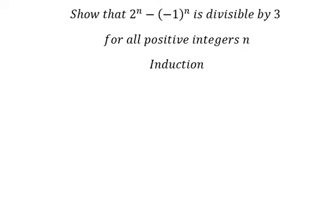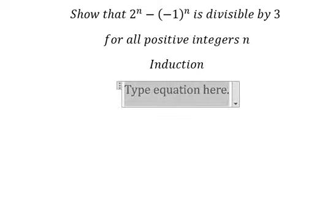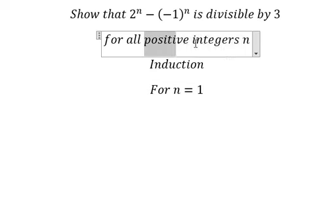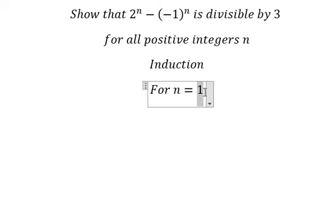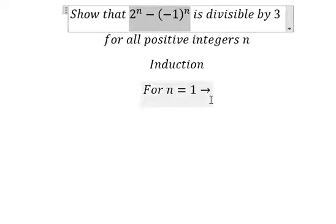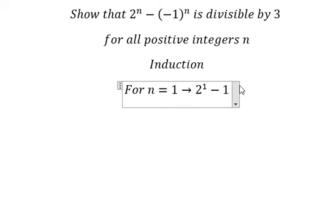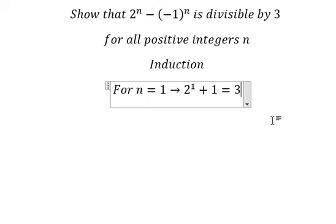So I need to put for n equals to number 1 because this is for all positive integers. So the smallest is about number 1. So I will put number 1 here. And we can get that is about number 3. And number 3 can divide by number 3.